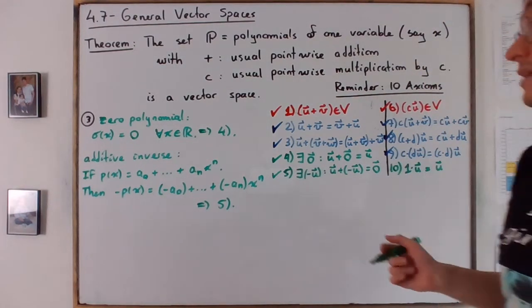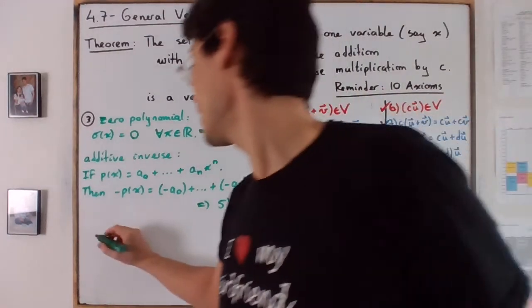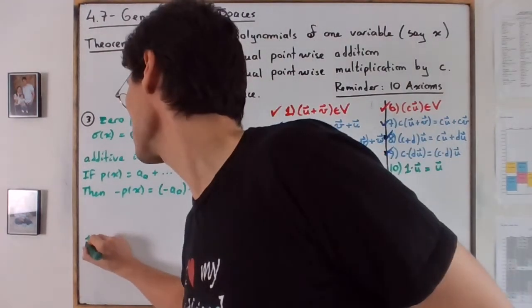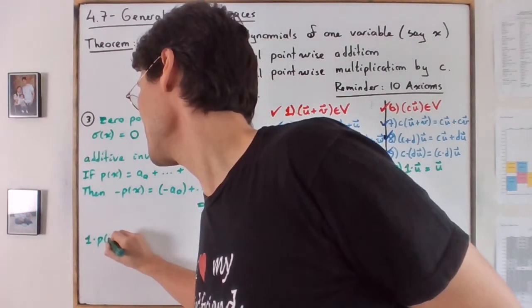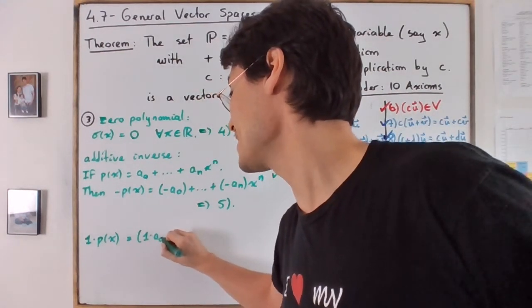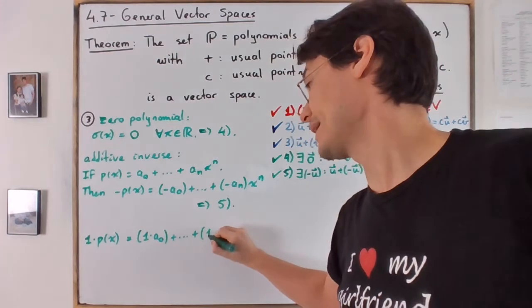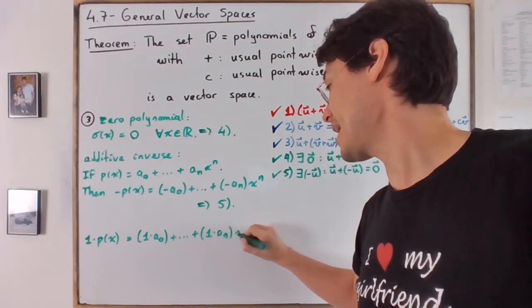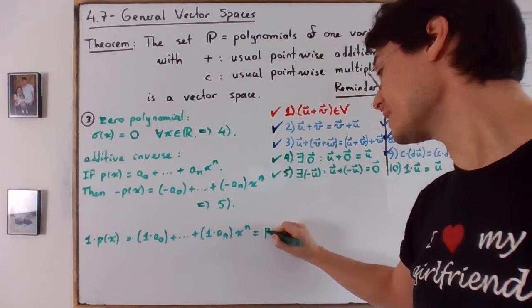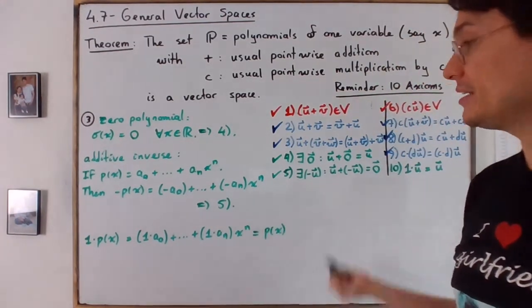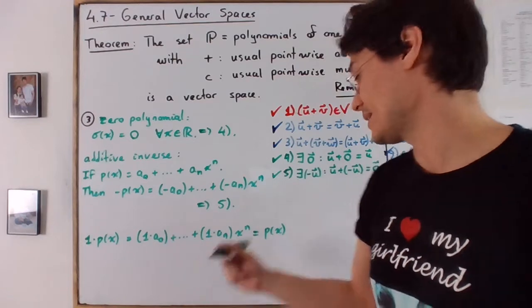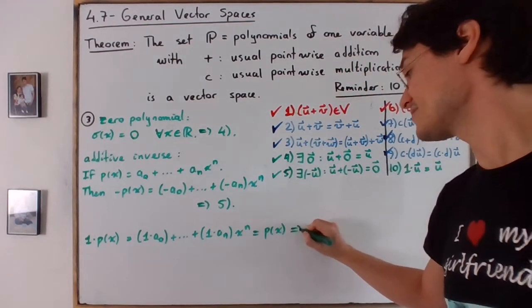Now finally, for number 10, obviously so one times a polynomial, so one times p of x which is I remind you by definition one times a zero plus all the way up like one times a n x to the power of n, which is obviously equal to P of x, okay? Well, to prove it, it's very simple. You just rewrite a zero a n instead of just one times, but that's it. So this verifies 10.